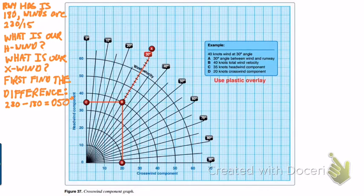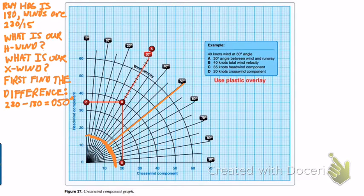So at 50 degrees, we enter our chart at the 50-degree mark and travel downward until we hit the 15-knot radial line, which denotes our wind speed. We can imagine it as a line right here. Once we hit that line, we draw a line straight down from there to find our crosswind component — in this case approximately 11 knots — and our headwind component — in this case approximately 9 knots.